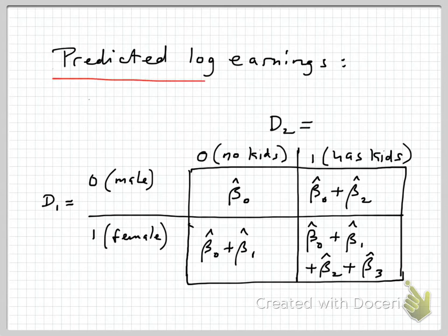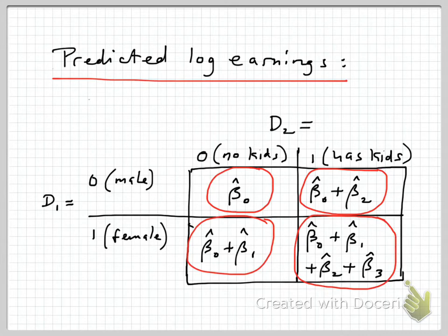These two binary variables imply four possible cases. We could have a male with no kids, we could have a male who has kids, we could have a female with no kids, and of course we could have a female with kids. I've put in here, if we had estimated this regression and had the coefficient estimates, this is the implications in terms of the predicted log earnings for each of these possible sets of characteristics.